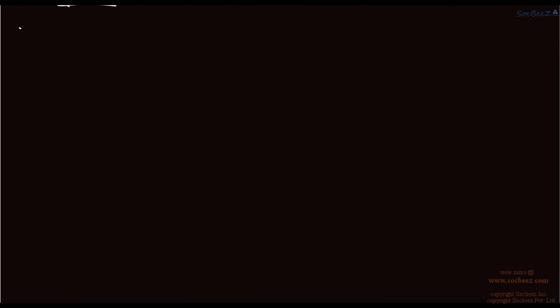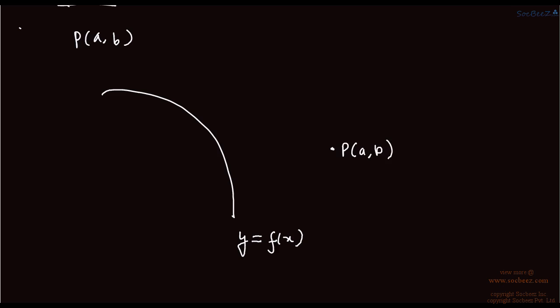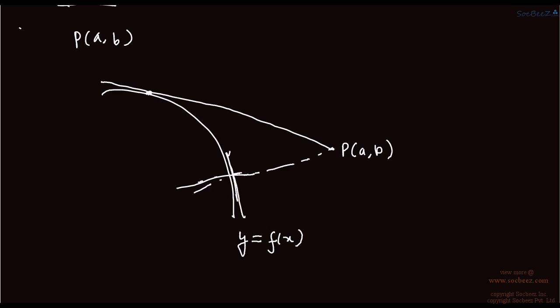Now we are going to study tangent from an external point. Given a point P which does not lie on the curve y equals f(x), the equation of possible tangents to the curve from this point — one tangent touches the curve at one point. The normal will be perpendicular to some tangent on this curve.